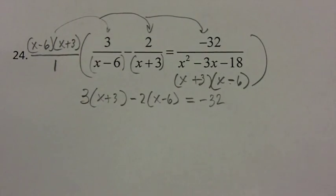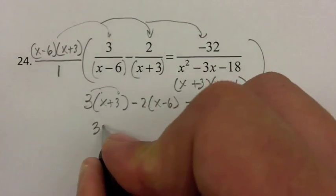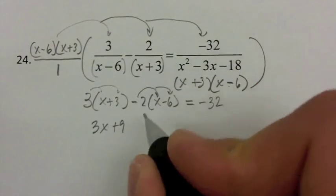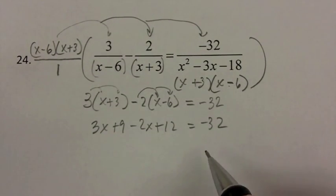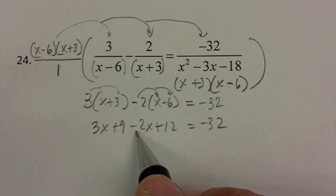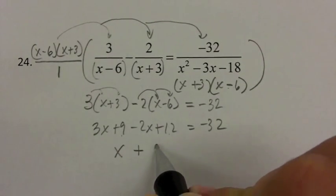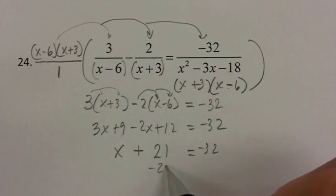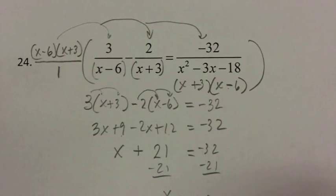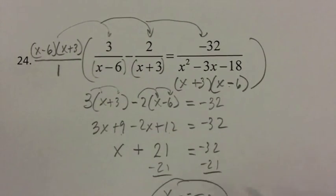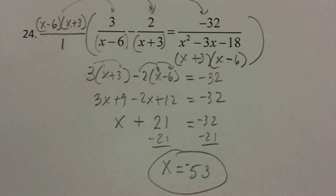Now I solve the equation. I'll distribute the 3 to get 3x plus 9, and distribute the negative 2 to get minus 2x plus 12, equaling negative 32. Combining like terms: 3x and negative 2x give just x, and 9 plus 12 gives positive 21. So x plus 21 equals negative 32. Subtracting 21 from both sides gives x equals negative 53 as my final answer.